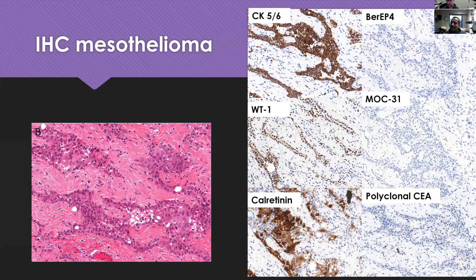These are very difficult for trainees to remember — the carcinoma-side markers like BerEP4, MOC31, and CEA are not things other specialties use very often, so they just find it like a jumble of letters and numbers. The boards make it worse — they try to confuse you between CD15 and LeuM1, and then try to use it in the Hodgkin setting and confuse you even more. For us, we do it so often that it just embeds in your brain. There's no perfect mnemonic.